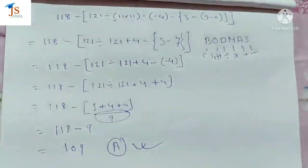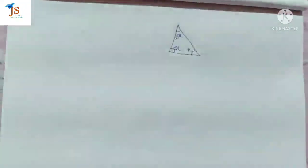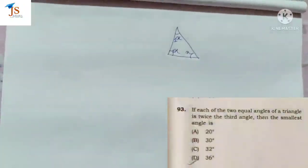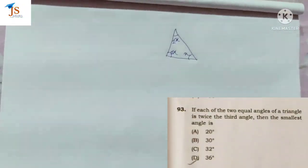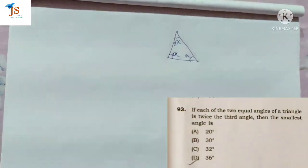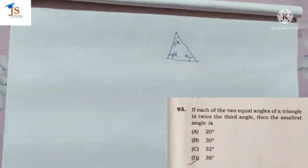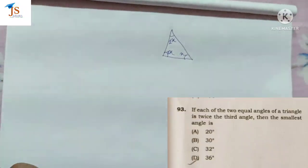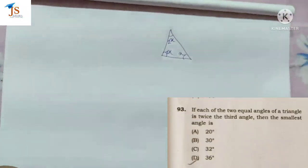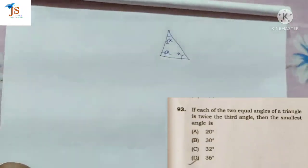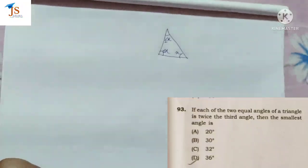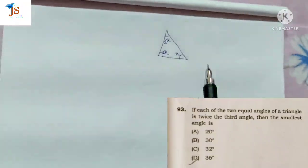Next question. Next question is: if each of the two equal angles of a triangle is twice the third angle, then what is the smallest angle?